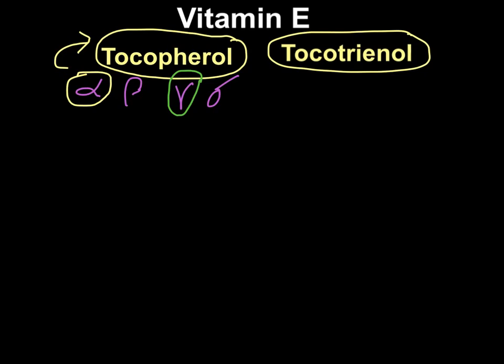The sources for vitamin E are oils — basically any type of oil, such as corn oil, safflower oil, and sunflower oil. Vitamin E is rich in all kinds of oils, so just using oil is sufficient to meet the RDA — the recommended dietary allowance — for vitamin E.